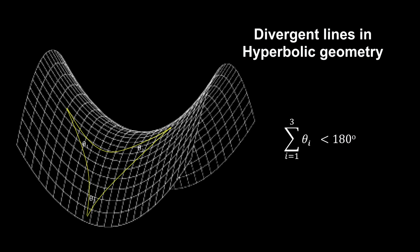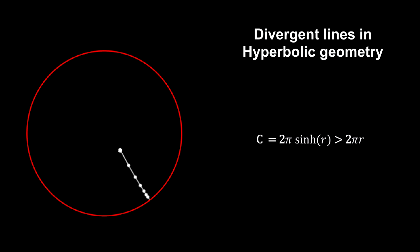Here, the sum of the angles of a triangle is less than 180 degrees. And the circumference of a circle is more than 2 pi times its radius. This is hyperbolic geometry. It represents space with a negative curvature.